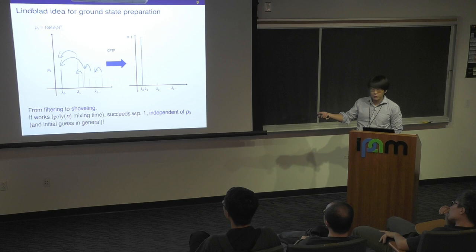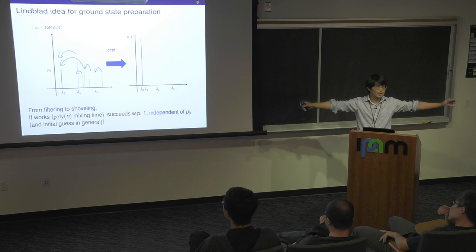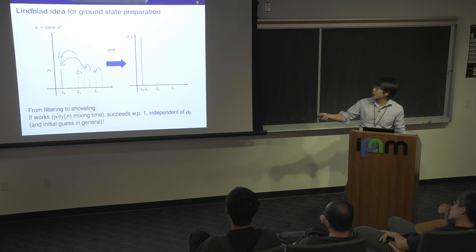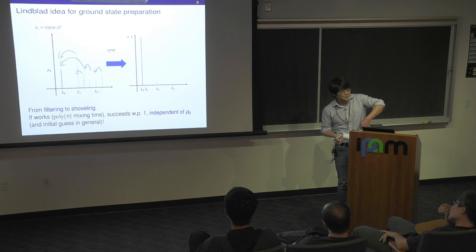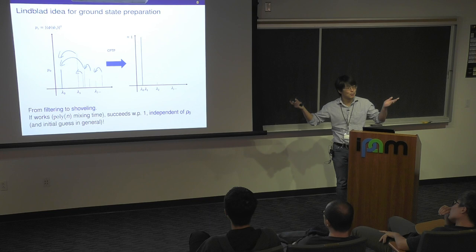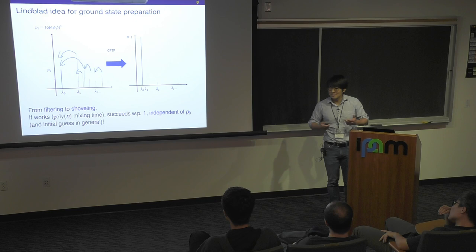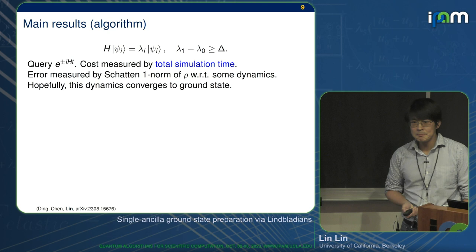You start from some initial state which has some distribution — I'm writing this as a pure state, but it should really be interpreted as a mixed state. During the algorithm, you're shoveling the bad parts from high energy towards low energy. In the end, you shovel everything to the ground state and you end with a pure state. Sounds like magic, but it works — if the mixing time is polynomial.